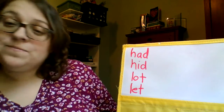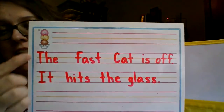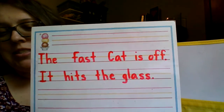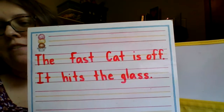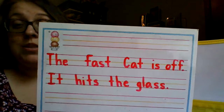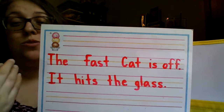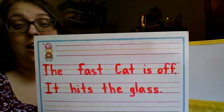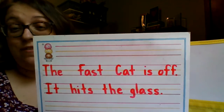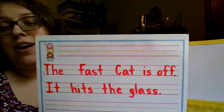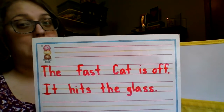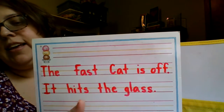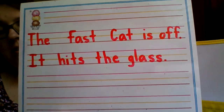Next is handwriting practice. We have two sentences to practice. The first one says: The Fast Cat is off. Notice in that sentence the words Fast and Cat have an uppercase letter — because when we're talking about something that has a specific name, like our names or the months of the year or the days of the week. In this case, we're talking about that race car that Hot Rod built, and it has a specific name called the Fast Cat. So make sure they're uppercase in your sentences too. The second sentence says: It hits the glass. This will be the end of our daily routines.